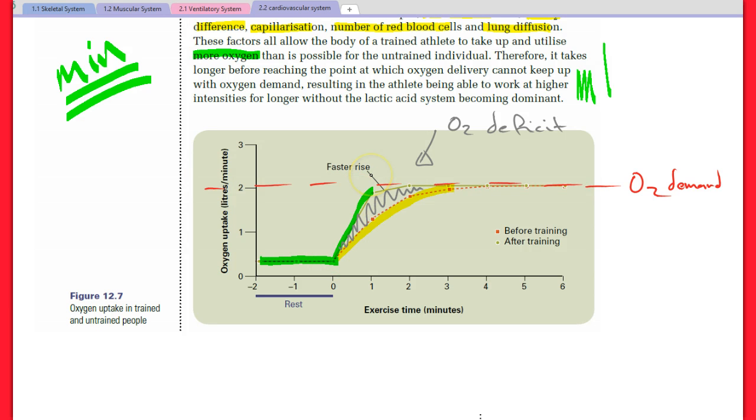Because after training we can achieve that more quickly, there's a lesser reliance on the anaerobic systems. Anaerobic systems, the metabolic byproducts of those systems are fatiguing, so hydrogen ions, build up of inorganic phosphate.